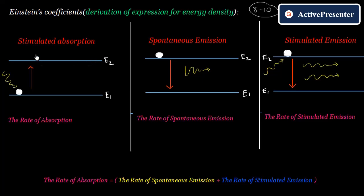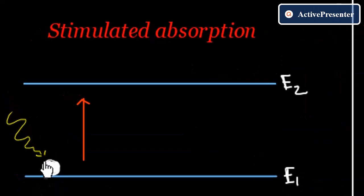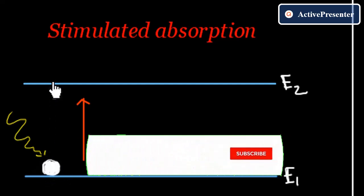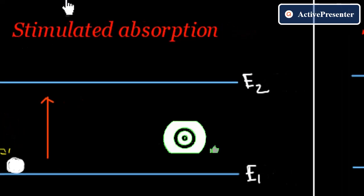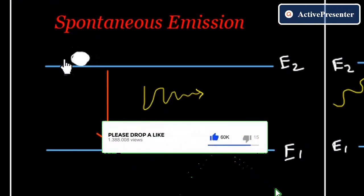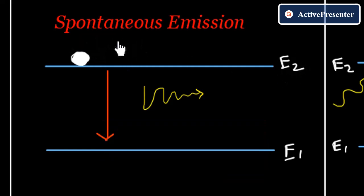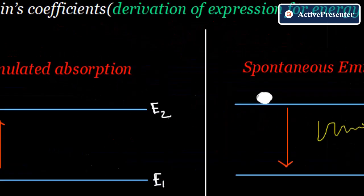In the case of stimulated absorption, the electron initially stays in the ground state energy level E1. Once the energy is absorbed, it goes to the higher state energy level E2. In the case of spontaneous emission, the electron initially stays at E2 and without any stimulation comes back to the ground state E1, emitting the extra energy absorbed during stimulated absorption.